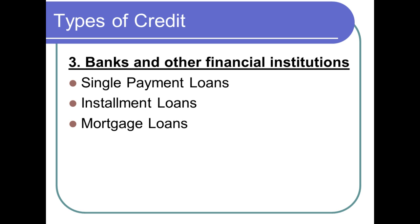Banks and other financial institutions offer single payment loans, installment loans, and mortgage loans. Installment loans would be like car loans, and mortgage loans are for real estate. Single payment loans mean you borrow money and then have just one payment back — you don't see those too often personally, but they are out there. The ones you're definitely going to see are installment loans and mortgage loans.